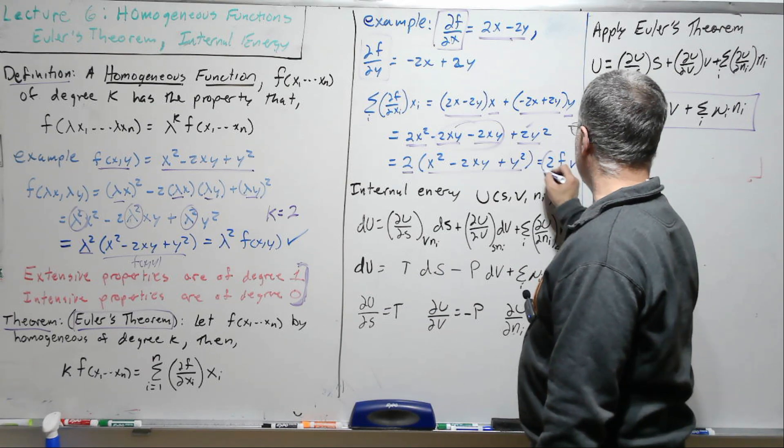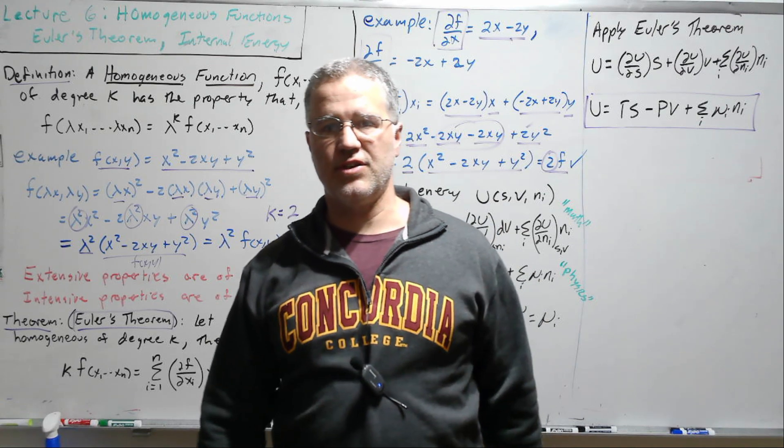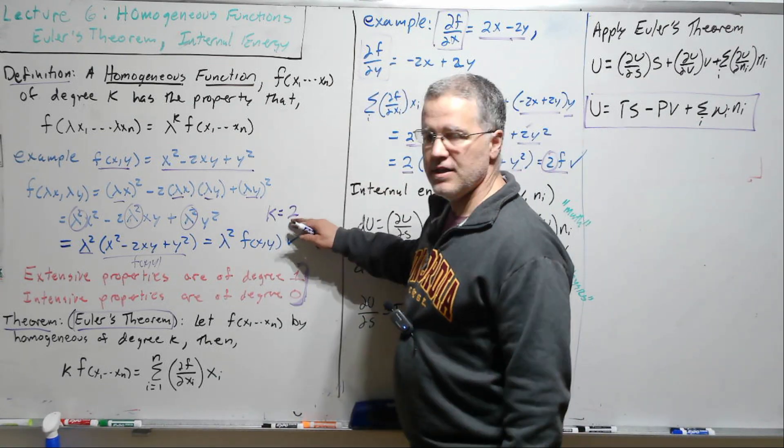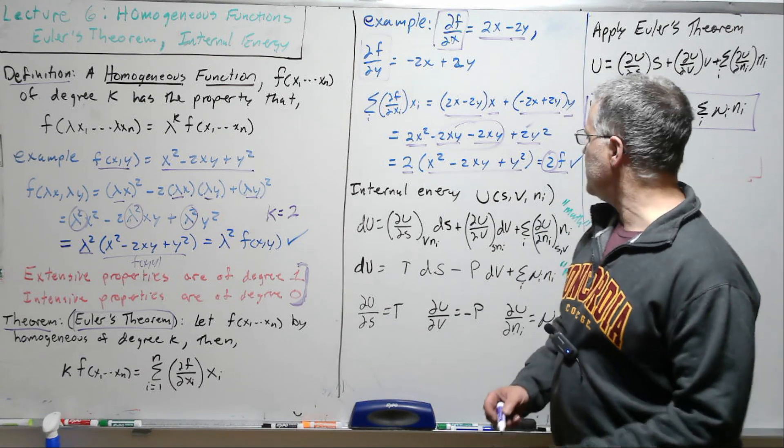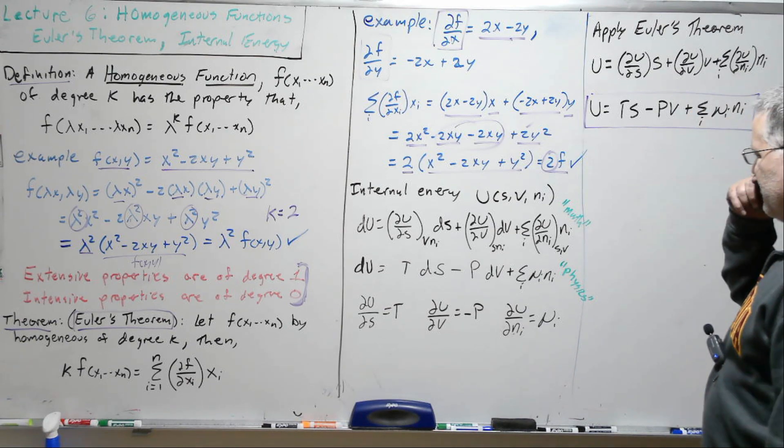There's, with that we have got a common factor of 2. And so we have 2 times this, which is 2f. So this is matching the left hand side of Euler's theorem, which says that we should be k times f. And we found out earlier that k was 2. So that is an example of Euler's theorem playing itself out.